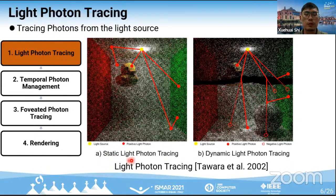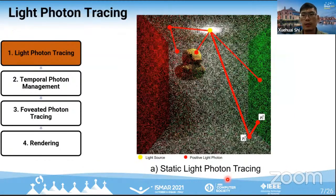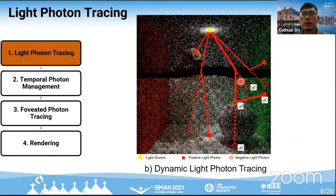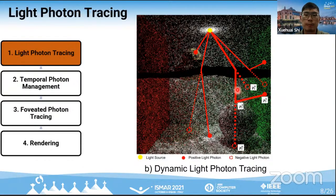Step 1: Light photon tracing uses the Tawara et al. 2002 irradiance cache method. Static light photon tracing emits photons PL1 from the light source, which bounce once on the scene surface to generate PL2. Dynamic light photon tracing traces photons for dynamic objects each frame: when a ray hits a dynamic surface, it spawns two rays — a solid positive ray generating positive photons PL3 and PL5, and a dotted negative ray generating negative photons PL4 and PL6 carrying negative energy used to subtract energy from the static irradiance cache due to dynamic object occlusion.